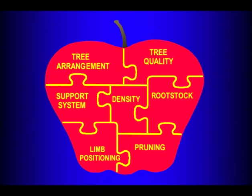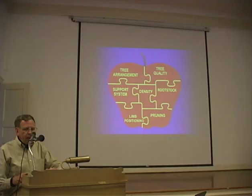The bottom two are tree training components — how you position the limbs and whether you remove any limbs through pruning. Those are the basic components, and that's the agenda for today. We're going to be discussing each piece of the puzzle. It's important to realize that the pieces of the puzzle are selected to be properly integrated; you can't select them all independently.